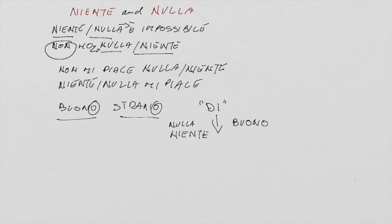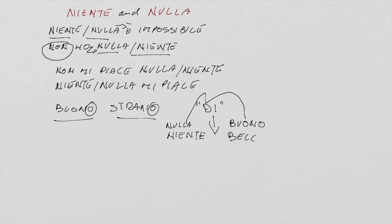The result is niente or nulla di buono. The same applies to 'nothing beautiful': beautiful is bello, you always keep the form bello, and you place the preposition di between niente or nulla and the adjective bello. So the result is niente or nulla di bello.